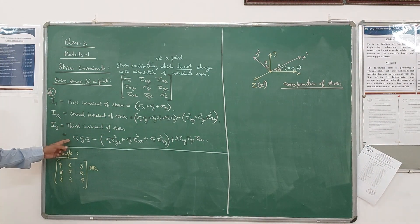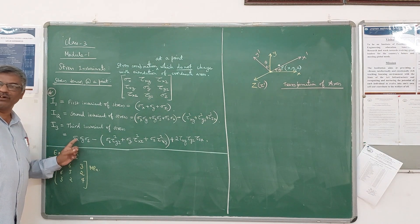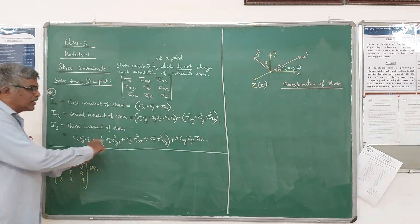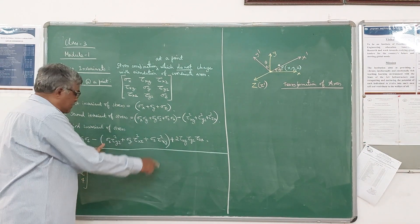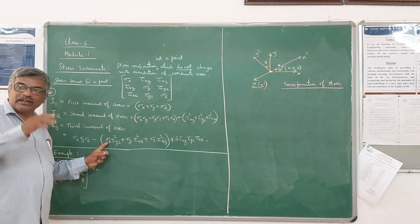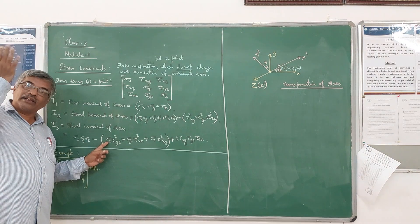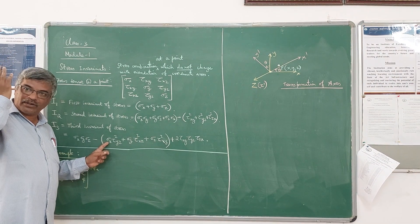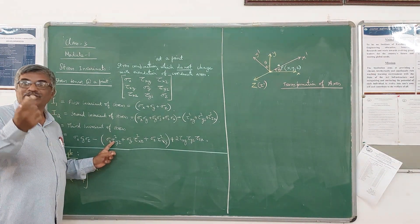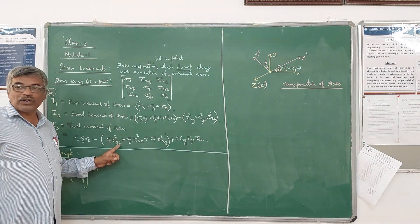For I3, it is the product of sigma x, sigma y, sigma z — and minus one-half, where you have to take the shear stress in the other direction: tau squared yz, in the x-direction.